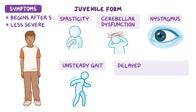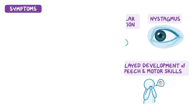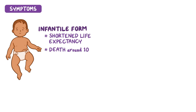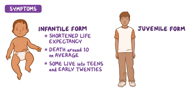There can also be delayed development of speech and motor skills. However, symptoms may be so mild that the disease goes undiagnosed. Individuals with the infantile form typically have a shortened life expectancy, with death occurring around 10 years of age on average, though some may live into their teens and early 20s. Individuals with the juvenile form typically have a normal life expectancy.